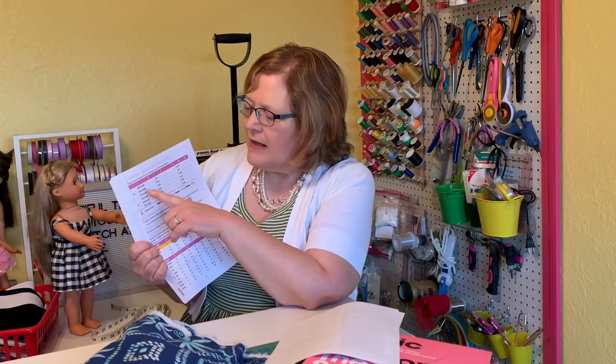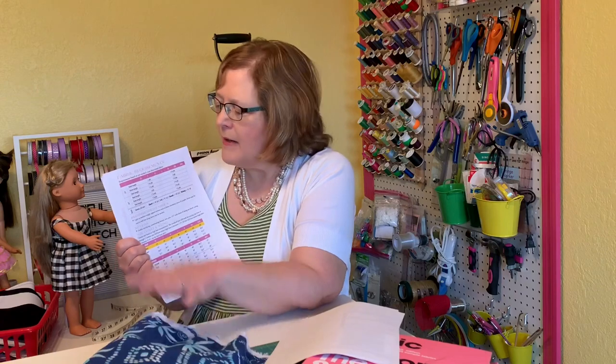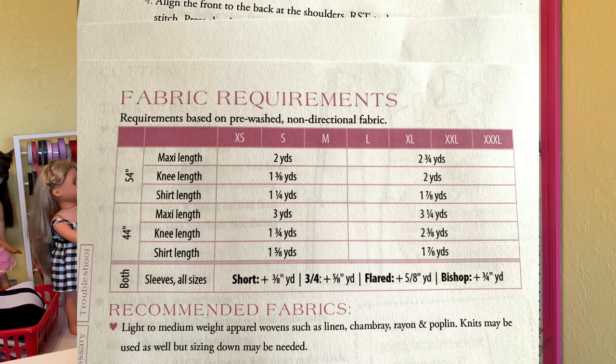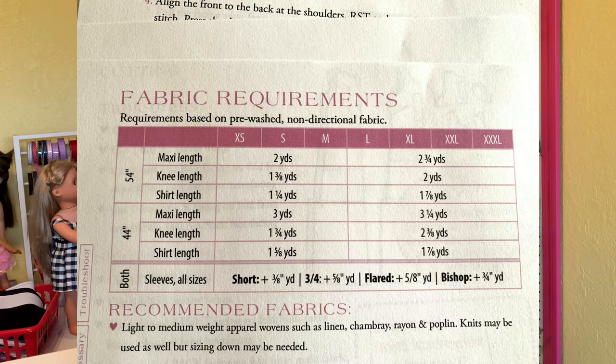Now that you have your measurements, you can choose your size and know how much fabric to purchase. On page 4 of the Cadence pattern, you'll find different lengths and the two widths of fabric — either 54 to 60 inches wide or 42 to 45 inches wide. I'm making the knee length and fall in the large to extra-large category, so I'll use two yards. Extra small to medium knee length would need one and three-eighths yards.